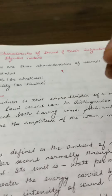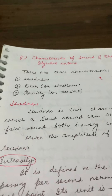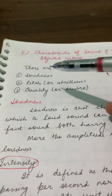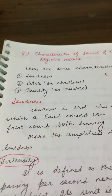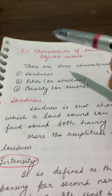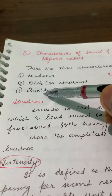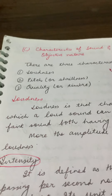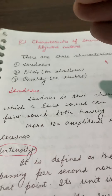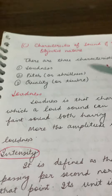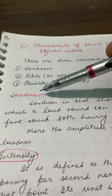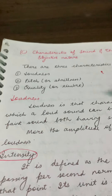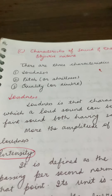Remember, both sounds should have the same pitch and quality — when pitch and quality are the same for two sounds, we can distinguish which sound is loud and which is faint using the characteristic of loudness. So we can distinguish sounds with this characteristic of loudness. Remember this very important point.